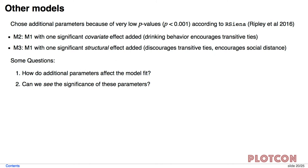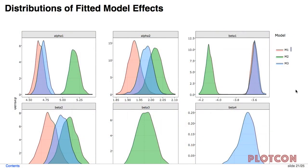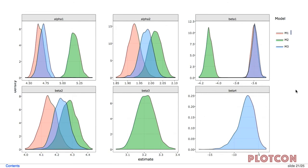We have some other models as well. We chose to add parameters to our straw man model based on their low p-values according to the software that we use in R. We add one with a significant covariate effect added. So that means that we take into account the drinking behavior. Then we also add one that's just another structural one just to see how that would change things. Some questions we might want to have answered here are how do these additional parameters affect the model fit? And also can we visually see the significance of these parameters?